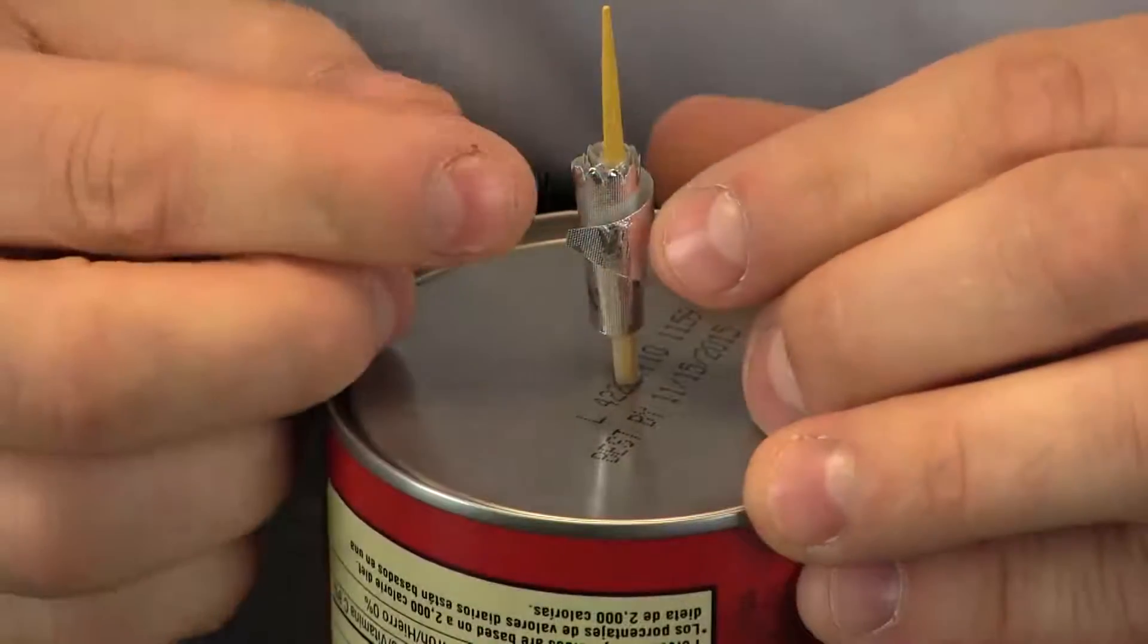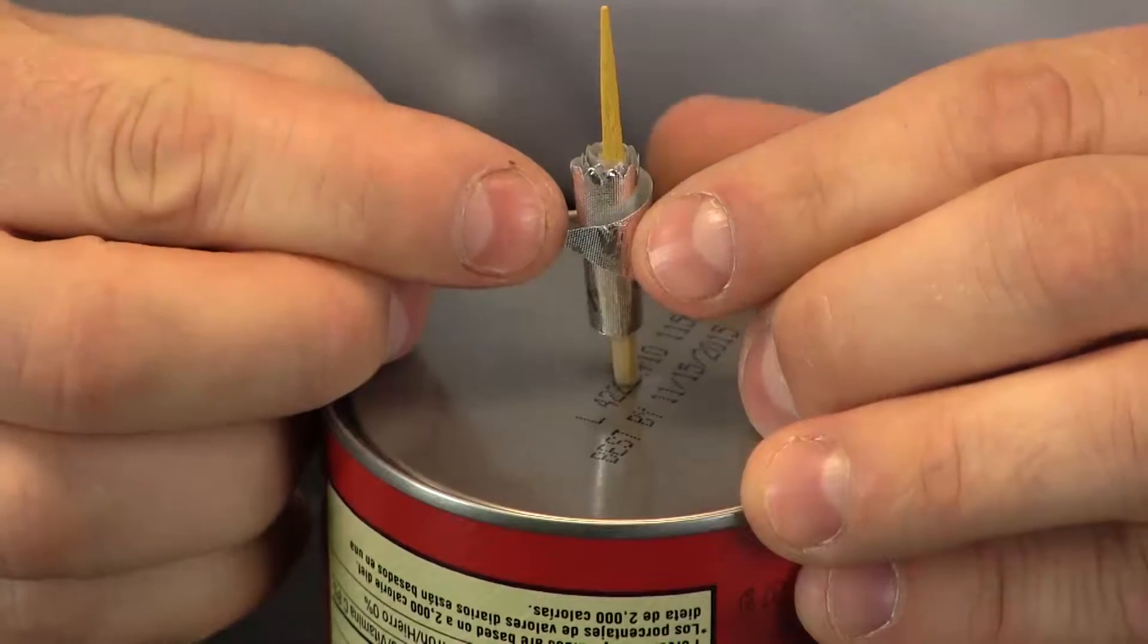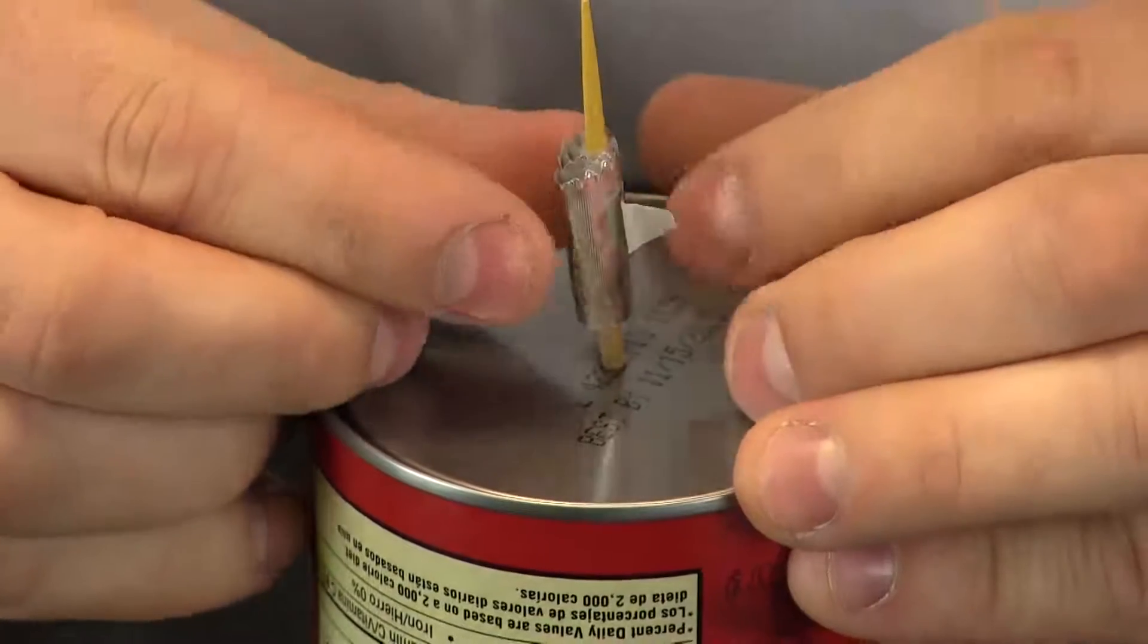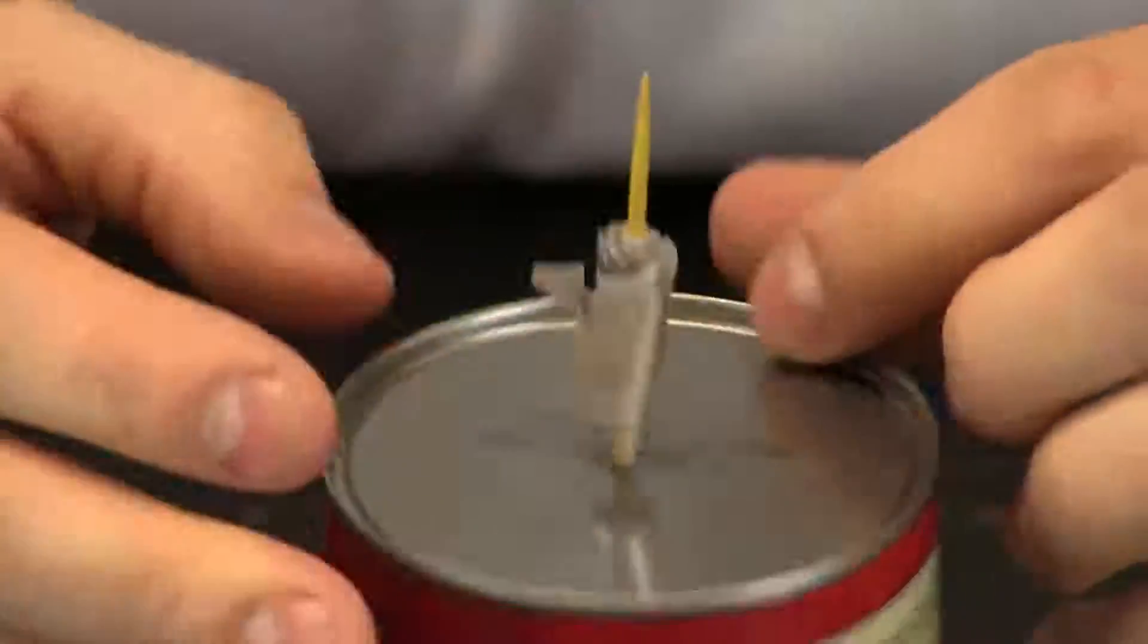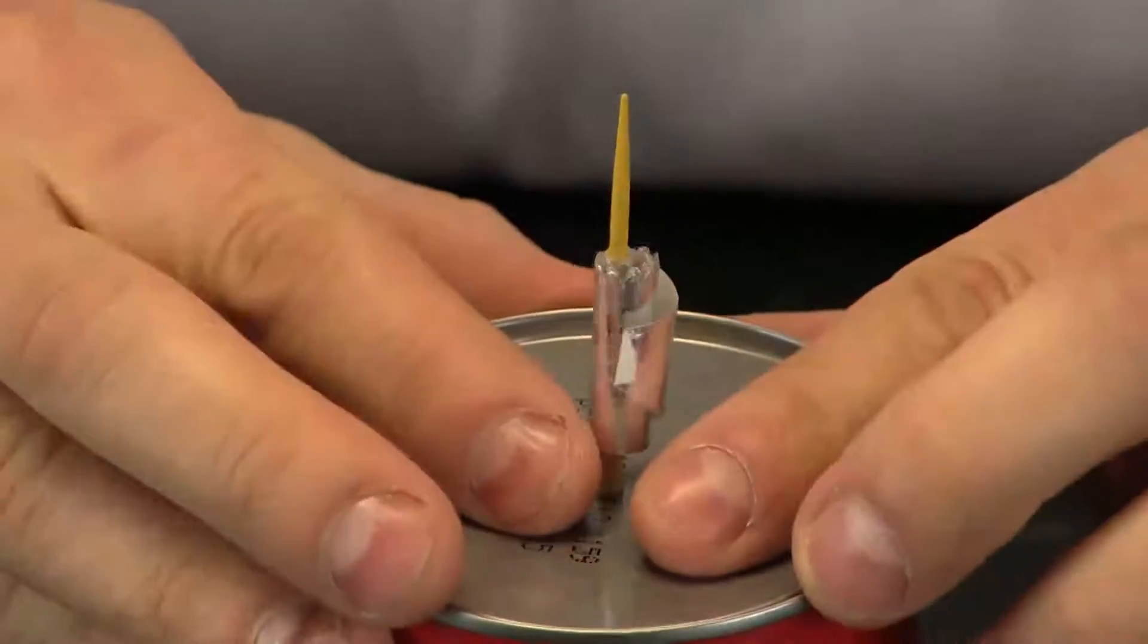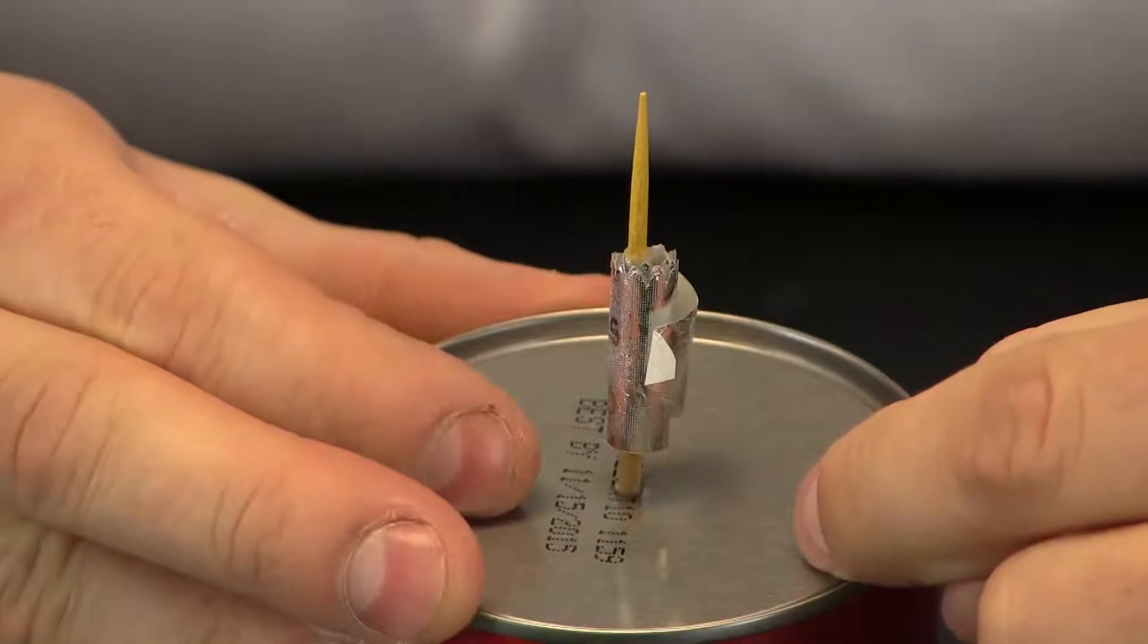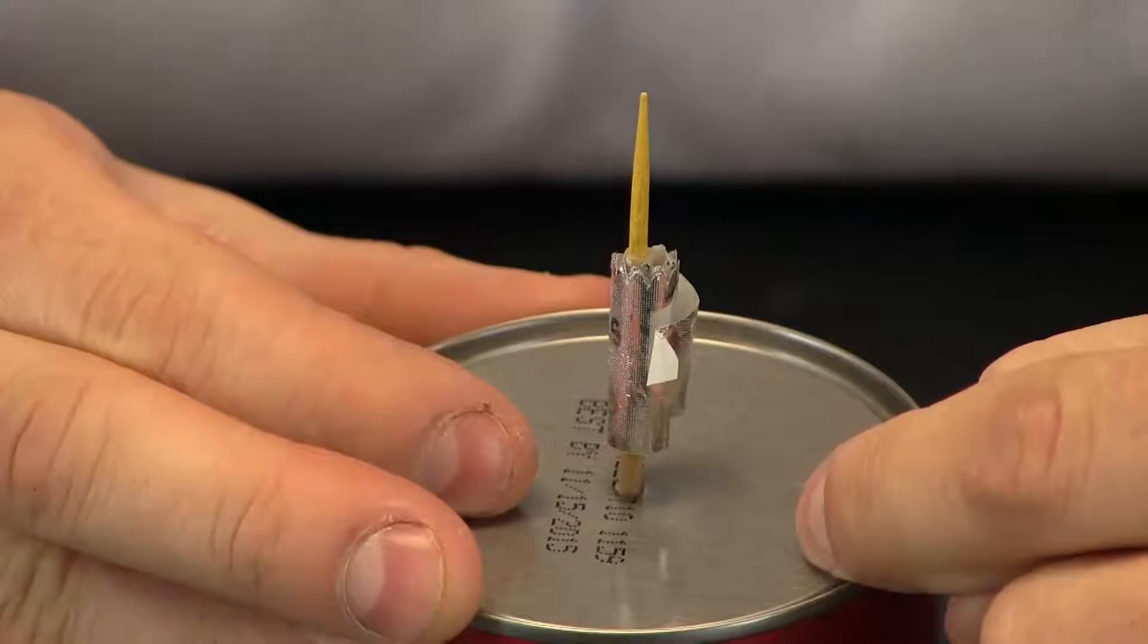We have zoomed in so you can see this next step. I need to take the tip of my pointer and what I am going to do is bend it so it sticks out on my can. Because I am going to use my marker to put little marks to see if I can measure the amount of water in the air.